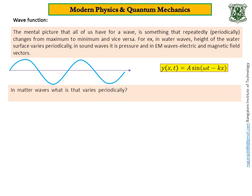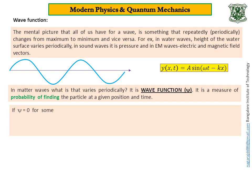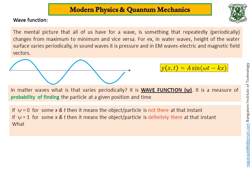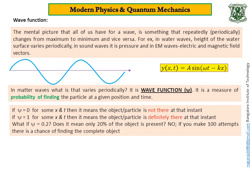Now the question: in matter waves, what is that varies periodically? It is wave function. It is a measure of probability of finding the particle at a given position at a given instant of time. Now look at this. If ψ equals zero for some x and t, then it means the object is not at all there at that instant. If ψ equals one, then the object is very much there, definitely there. Now what if ψ equals 0.2? Does it mean only 20% of the object is present? No. If you make 100 attempts, there is a chance of finding the complete object 20 times.